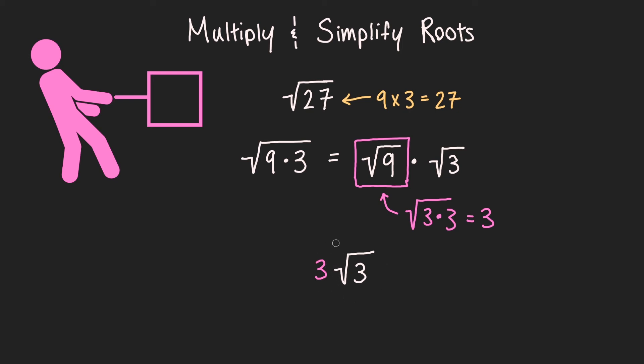Now, are there any more perfect squares that you see over here we can pull out? Well, the square root of 3 is not a perfect square, so this is fully simplified. So we just went from the square root of 27 all the way down to 3 times the square root of 3. And both of these have the same value, we just simplified it down.